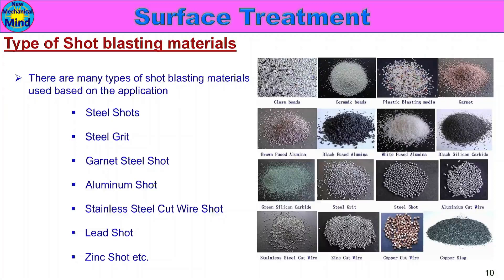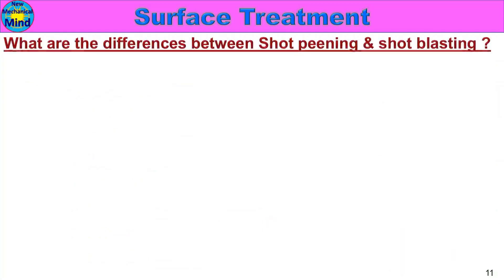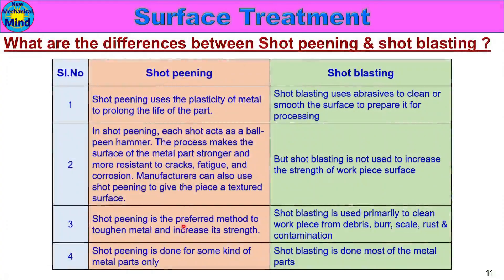Now let's look at the differences between shot peening and shot blasting. In this comparison table, the left side shows the shot peening operation and the right side shows the shot blasting operation. Shot peening uses the plasticity of metal to prolong the life of the part — the surface undergoes plastic deformation to increase strength. Shot blasting uses abrasives to clean or smooth the surface to prepare it for further processing.